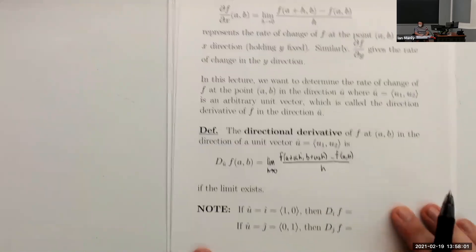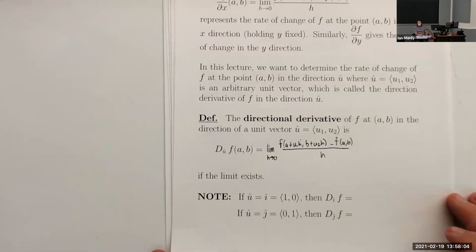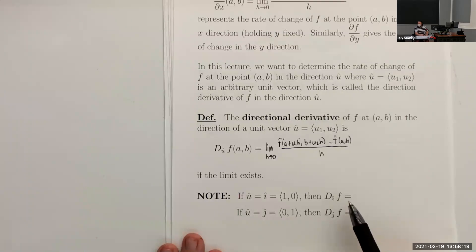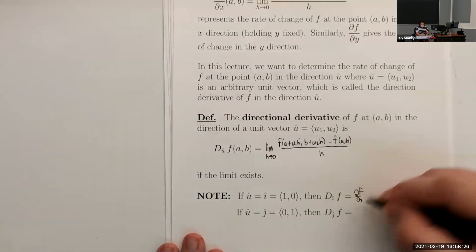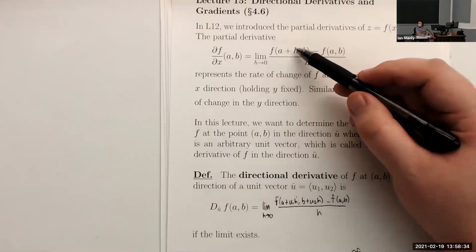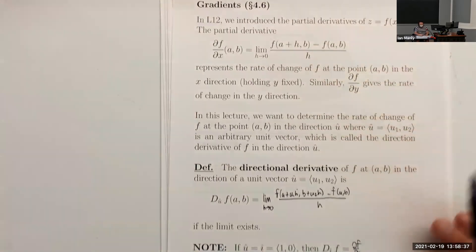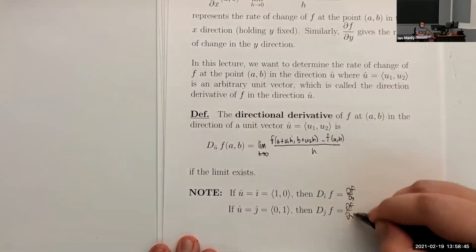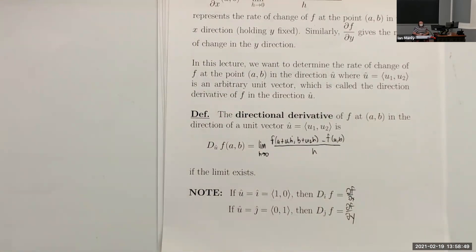The partial derivatives we've already seen are actually a special case of the directional derivative. For example, if we're only moving in the î direction (1, 0), the directional derivative simplifies to ∂f/∂x. If we're only moving in the y direction, it simplifies to ∂f/∂y. The main usage of the directional derivative is when we want a little bit of movement in each direction.